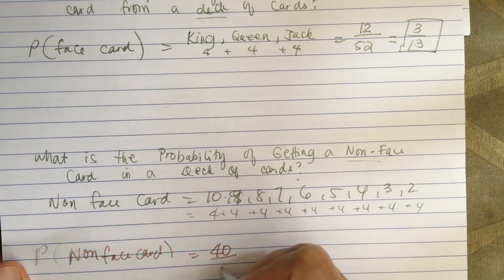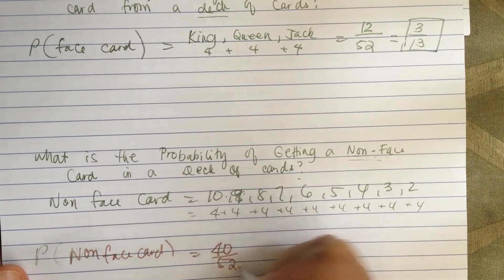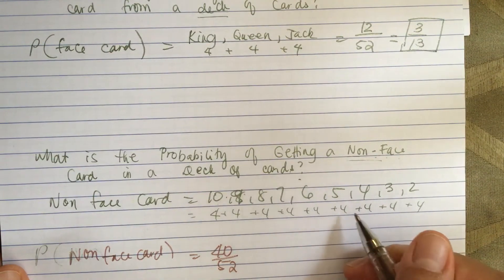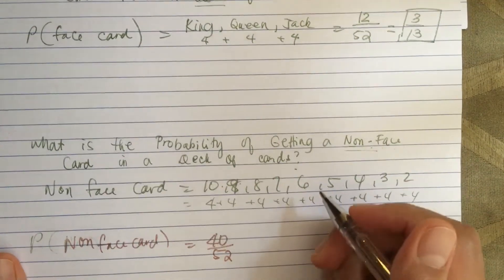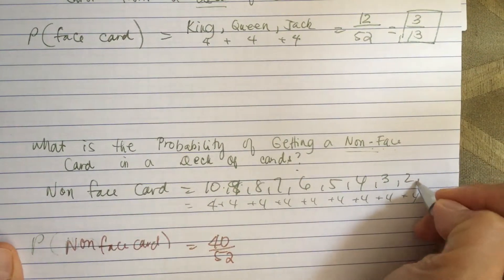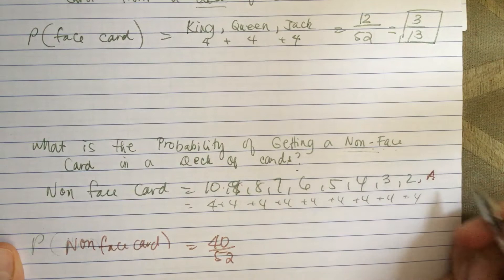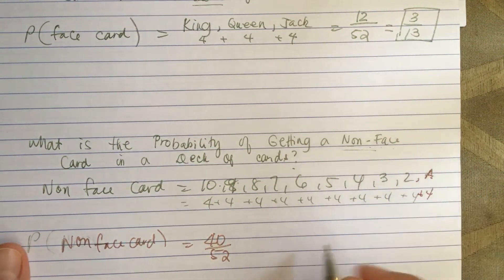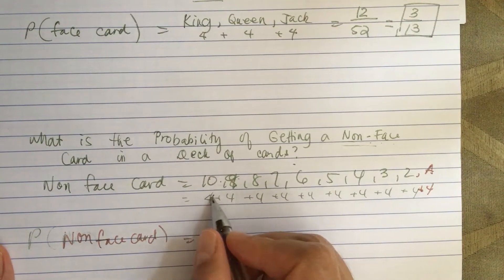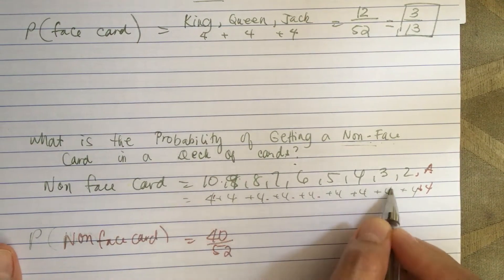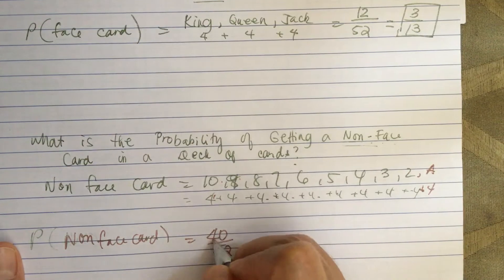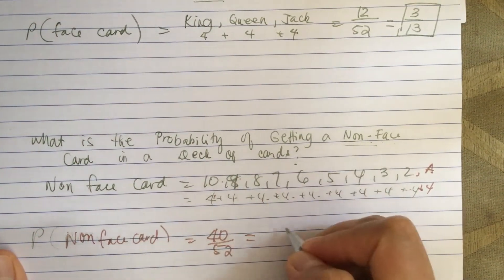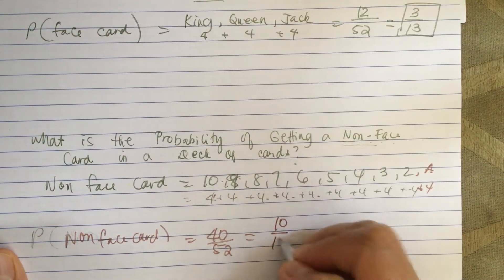The Ace is also included, and there are four of those as well. So counting 1, 2, 3, 4, 5, 6, 7, 8, 9, 10 ranks — 10 times 4 equals 40. So the probability of drawing a non-face card is 40 over 52, which equals 10 over 13.